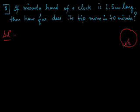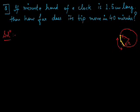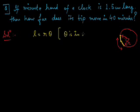We need to find how far the minute hand moves in 40 minutes. The formula is: length of arc L equals R times theta, where theta must be in radians. Remember: whenever you apply L equals R theta, theta has to be in radians.